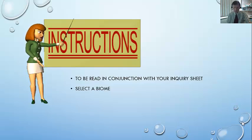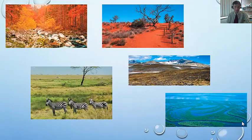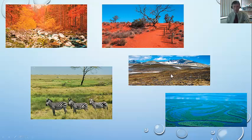The first thing you need to do is to select a biome. Here you can see the five examples: forests, grasslands, savannah, tundra, or aquatic biomes. Select one of those and then work out what aspects of food security are related to that.